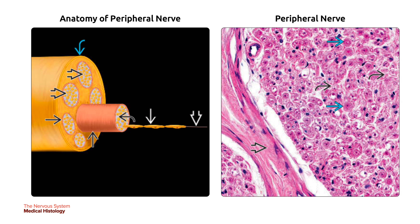On the right is a high-power view of a peripheral nerve cross-section showing individual fibers — the axons — in blue straight arrows in parallel arrays, surrounded by the endoneurium in curved black arrow and bundled into fascicles covered by perineurium in bold black arrow.